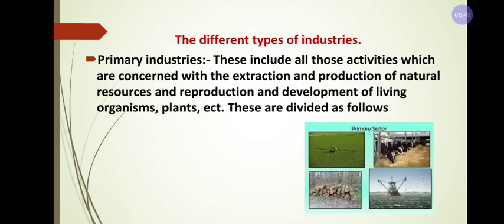There are three types of industry: primary industry, secondary industry, and tertiary industry. Let us discuss them one by one. First, primary industry — 'primary' means the first industry. This industry includes all activities concerned with the extraction and production of natural resources, and the reproduction and development of living organisms and plants.